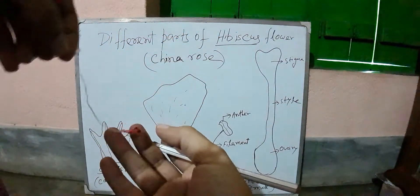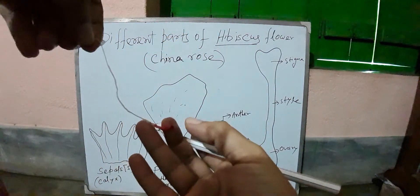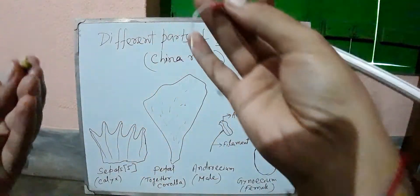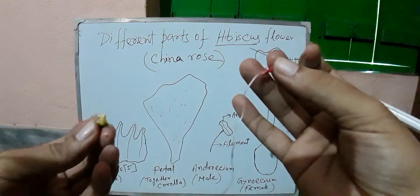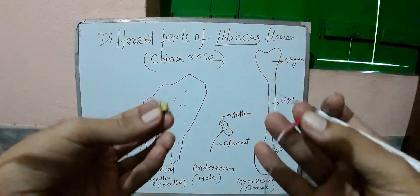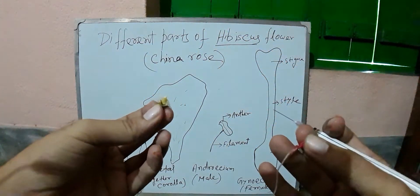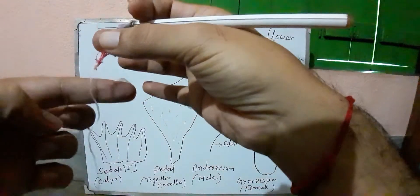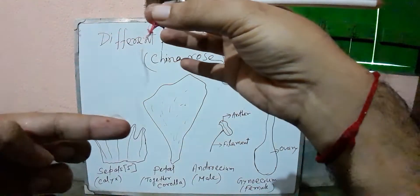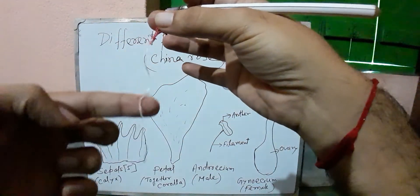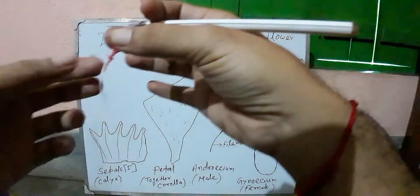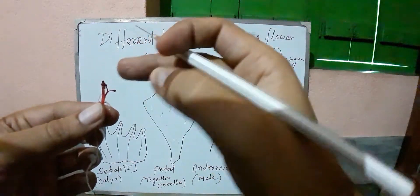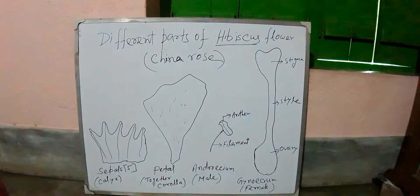This part is actually the gynoecium. This is the ovary. This is the style. And this is the stigma.